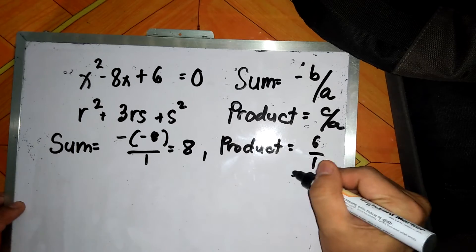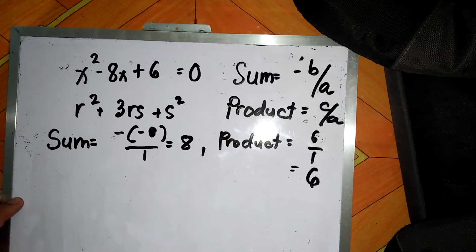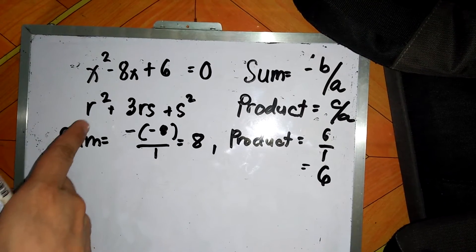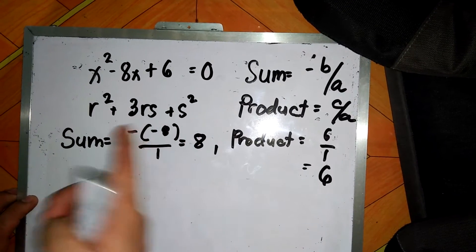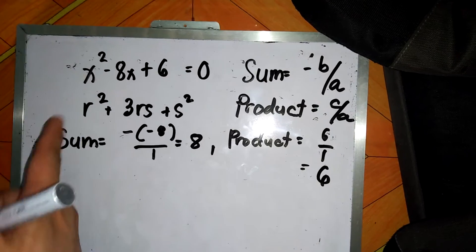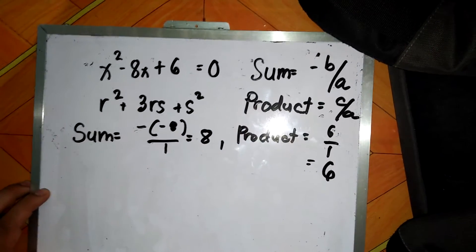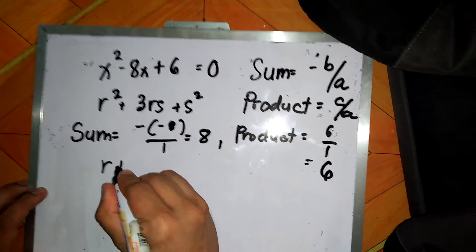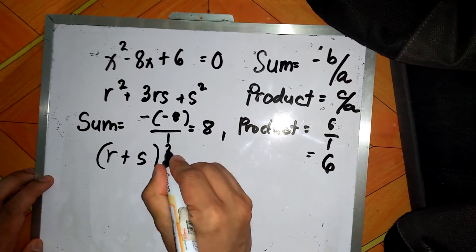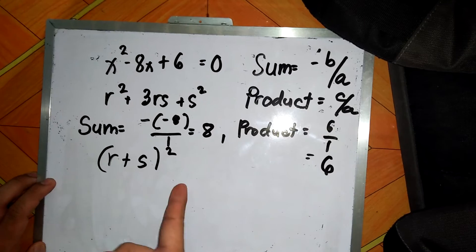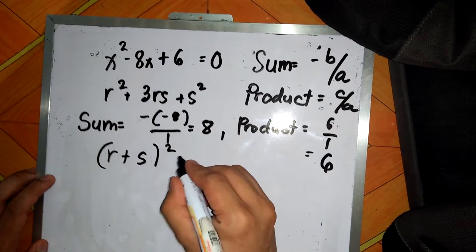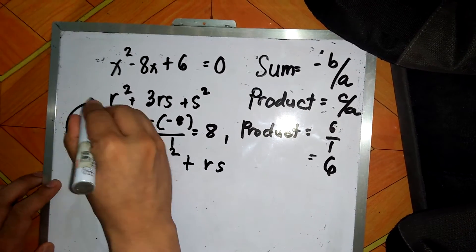Okay, so based on the given r squared plus 3rs plus s squared, this is similar to the square of r plus s, right? Since r plus s quantity squared is equal to r squared plus 2rs plus s squared, therefore we need an extra rs so that these two will be equal.